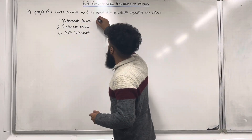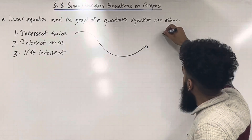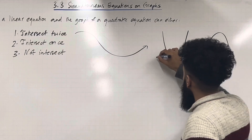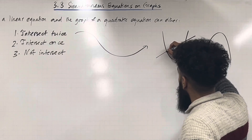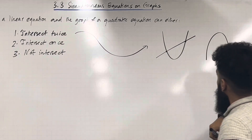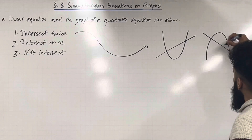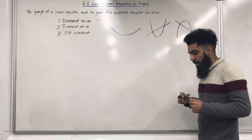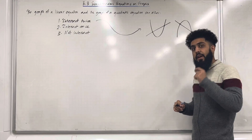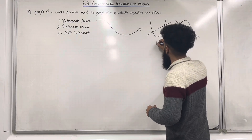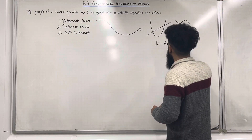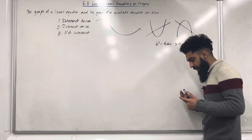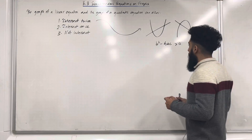Intersect twice: you could have a positive quadratic or a negative quadratic, and your line could intersect the quadratic twice. In this scenario, if we were to find the discriminant, b squared minus 4ac, it would be greater than 0 because there are two intersections — two roots, two solutions.